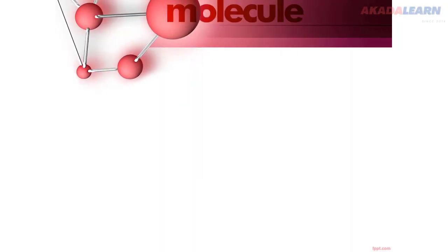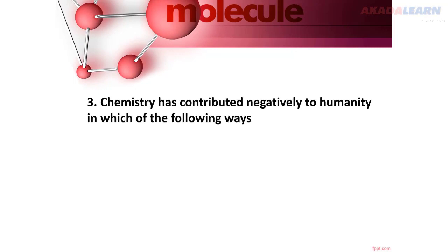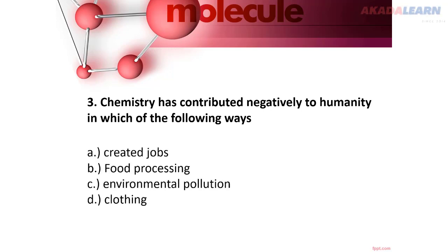Number 3: Chemistry has contributed negatively to humanity in which of the following ways? A. Created jobs. B. Food processing. C. Environmental pollution. D. Clothing.